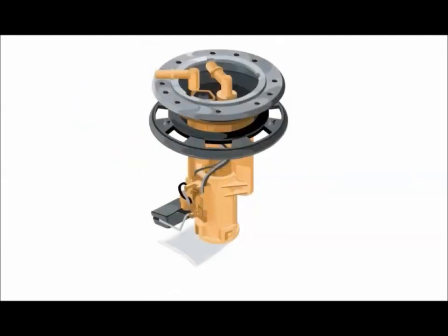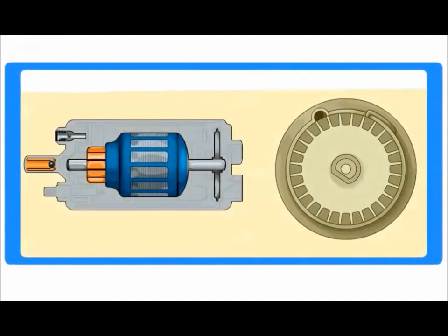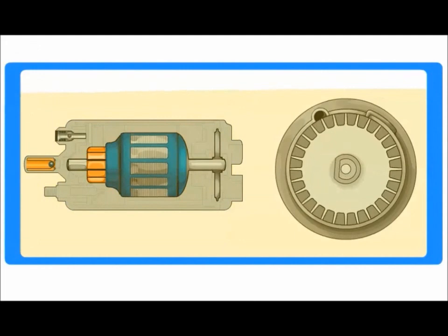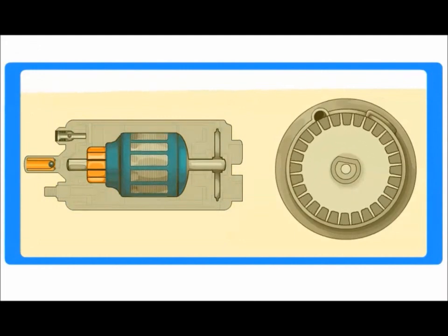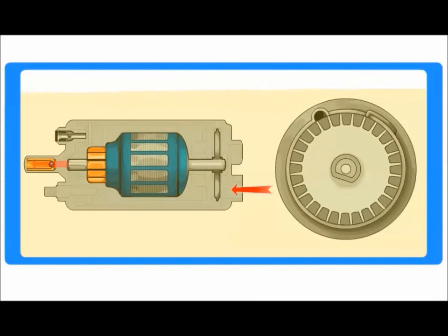The fuel pump assembly consists of a strainer, pump motor, pump impeller, relief valve, and one-way check valve. The pump is submerged in the fuel and driven electrically to turn an impeller, which will draw fuel through the strainer and develop pressure. The fuel exits through a one-way check valve.